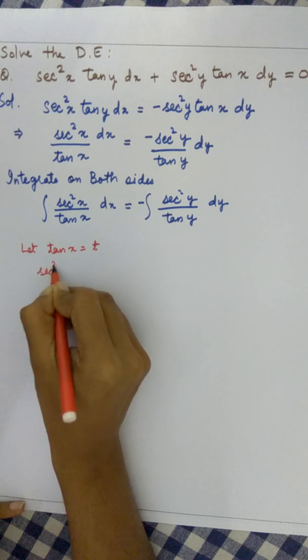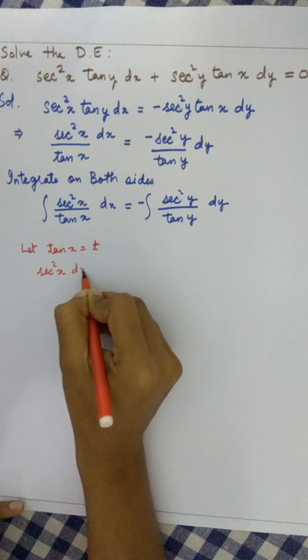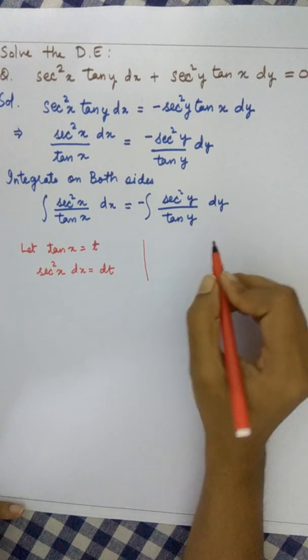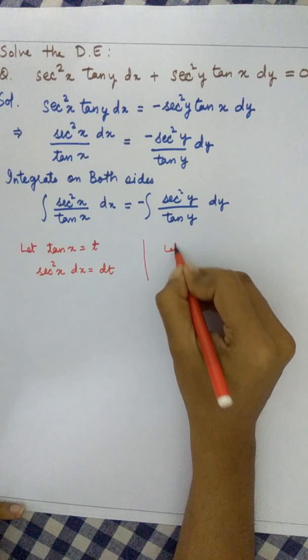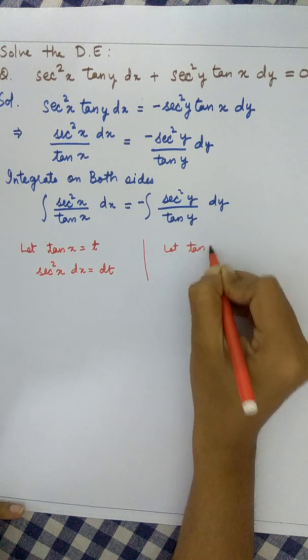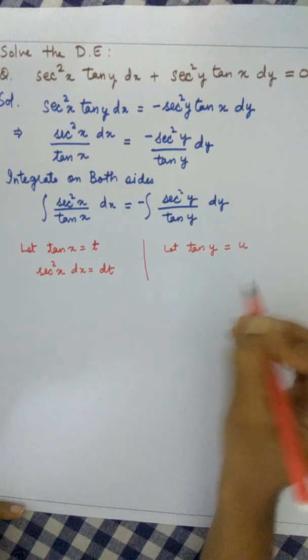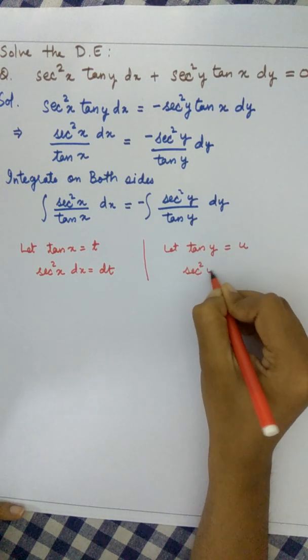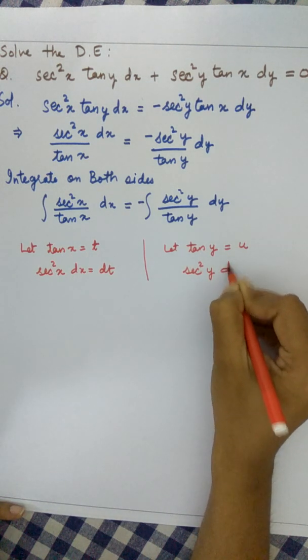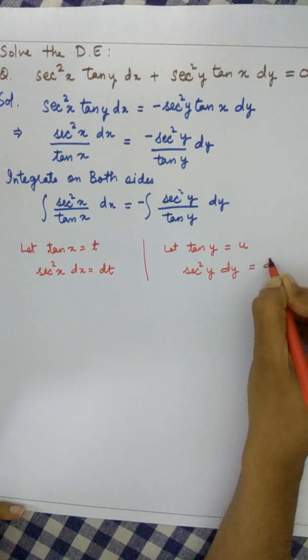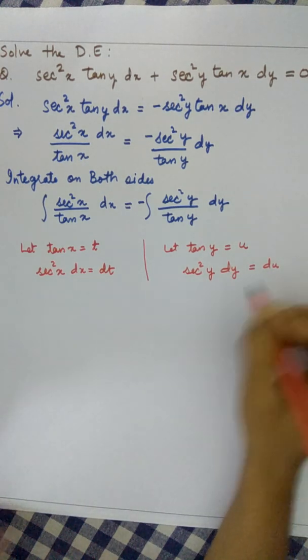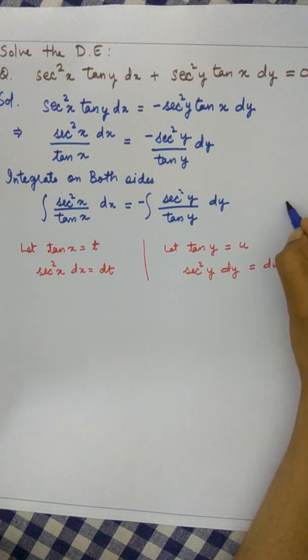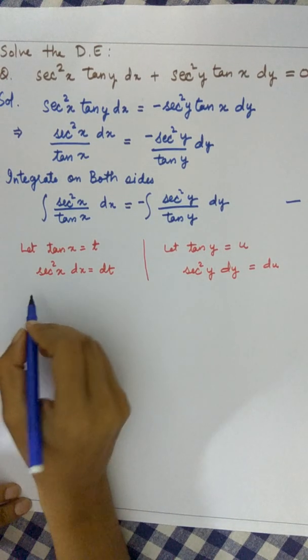Likewise, let's take tan y as u. Differentiating, we get sec²y dy equals du. Now let's substitute these into our equation.